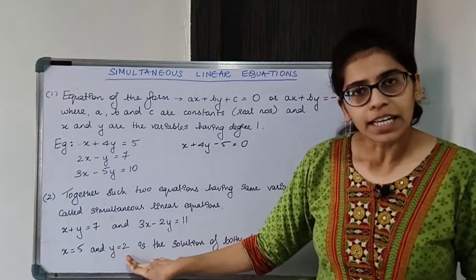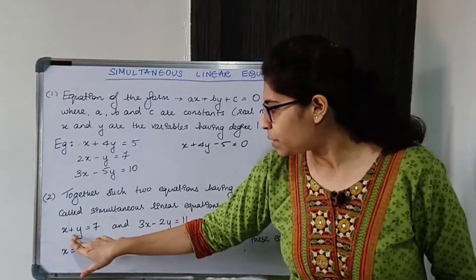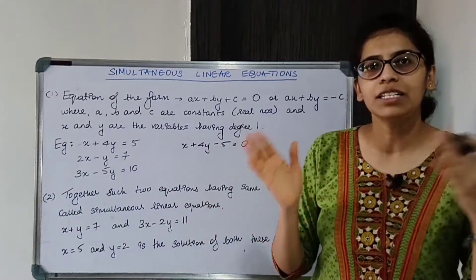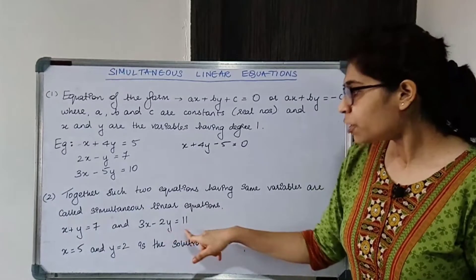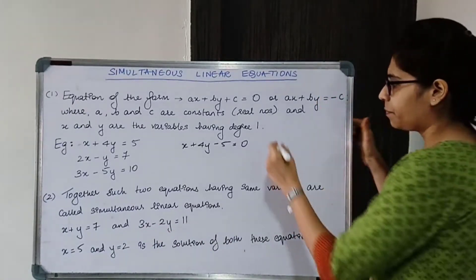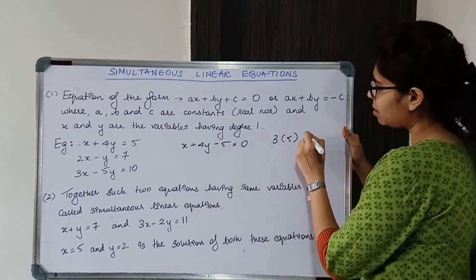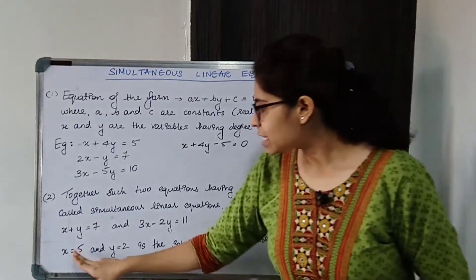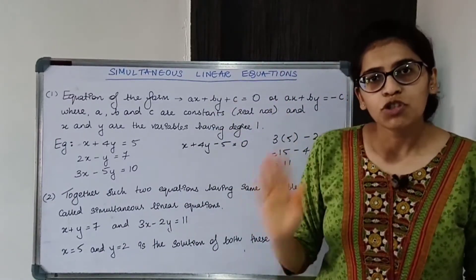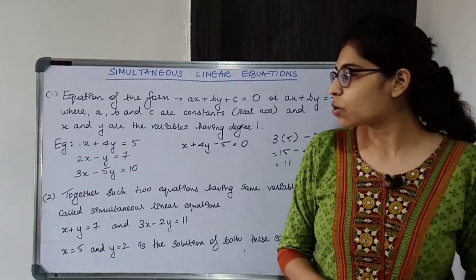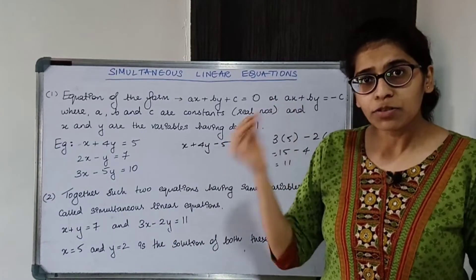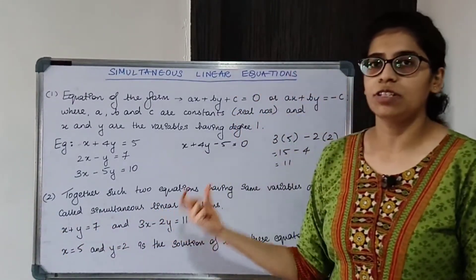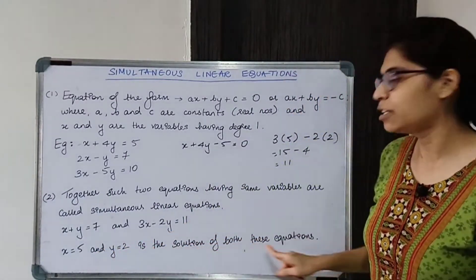For example, if X equals 5 and Y equals 2, substituting in the first equation: 5 plus 2 equals 7, so LHS equals RHS — it satisfies the equation. Substituting in the second equation: 3 into 5 minus Y equals 2, which gives 15 minus 4 equals 11, equal to RHS. So one value of X and one value of Y will satisfy both equations — these are simultaneous linear equations.